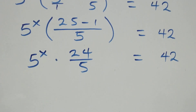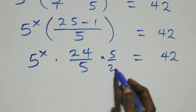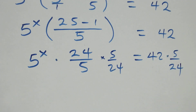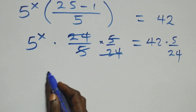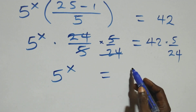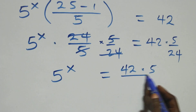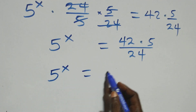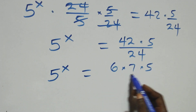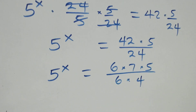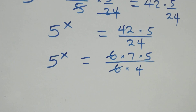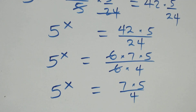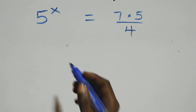So 5 raised to power x times 24 over 5 equals to 42 on this side. Then to remove this 24 over 5, multiply both sides by 5 over 24. This cancels each other and we have 5 raised to power x equals to 42 times 5 all over 24. This can also be written as 5 raised to power x equals to 6 times 7 times 5 over 6 times 4. The 6 cancels, so 5 raised to power x equals to 7 times 5 over 4.